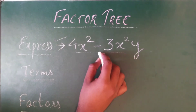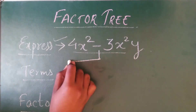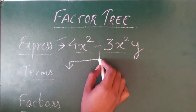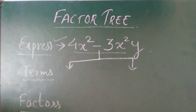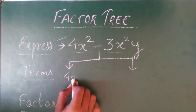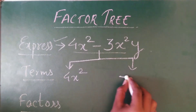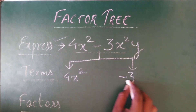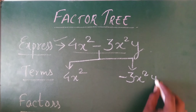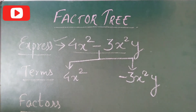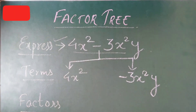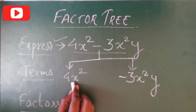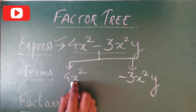Now write the terms. There are two terms in this expression: one is 4x² and the other is minus 3x²y. The minus sign is there — that is the most important point. Next, for the terms you have to write the factors.